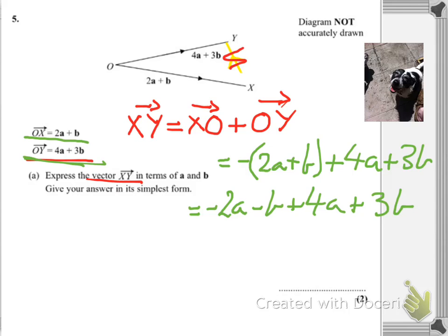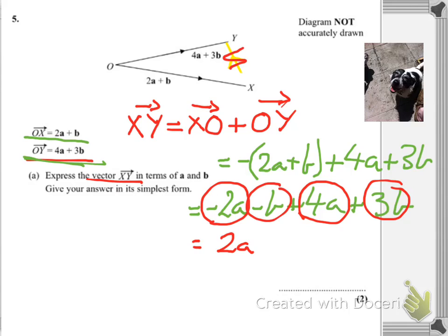So it becomes minus 2A minus B plus 4A plus 3B. Let's tidy — we gather terms. I've got minus 2A and plus 4A: 4 minus 2 is 2A. And then I've got 3Bs take away a B is 2B. And that's the answer. Or if you want to factorise and show off, you take the 2 out of the front and have A plus B. And that, everybody, is the answer to that.